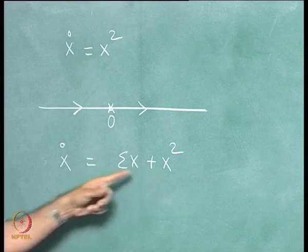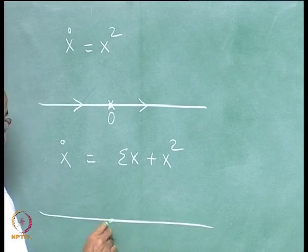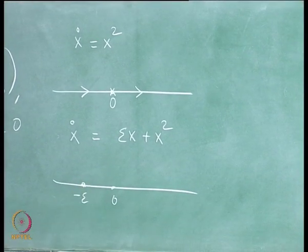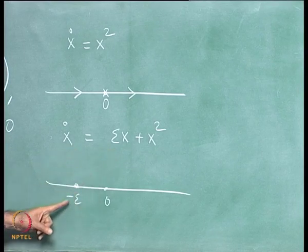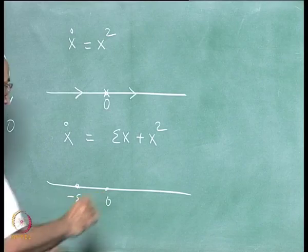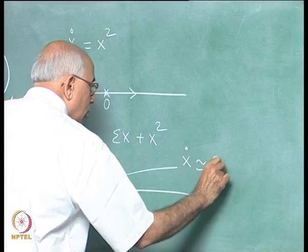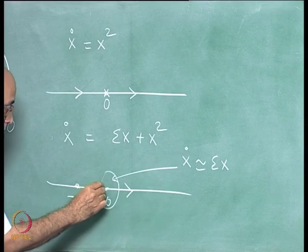For generic epsilon there is a critical point at the origin and another at x equal to minus epsilon. For positive epsilon, minus epsilon is on the negative side. Near the origin, x-dot is approximately epsilon·x, which for positive epsilon means the flow is outwards in both directions from the origin.